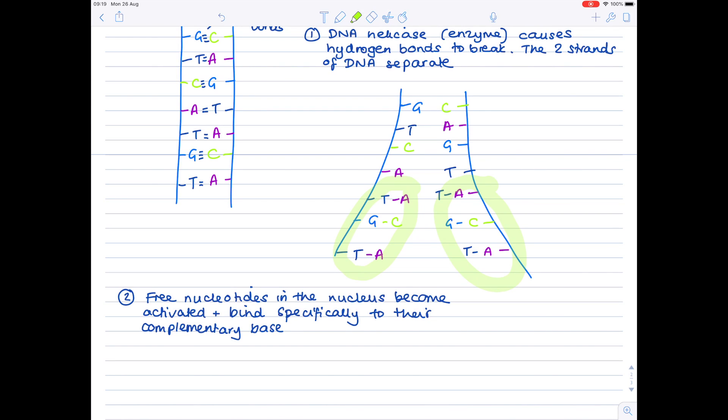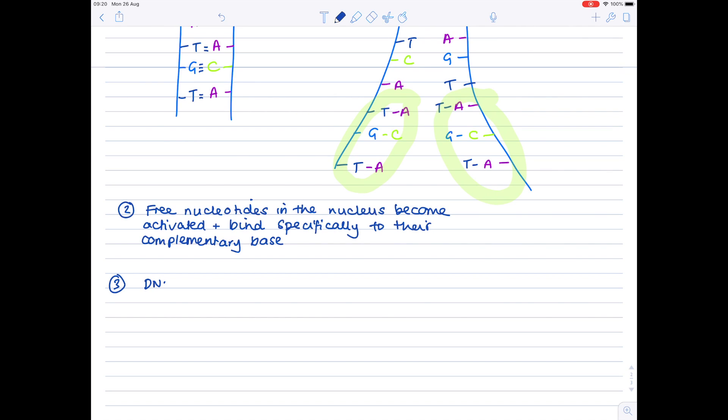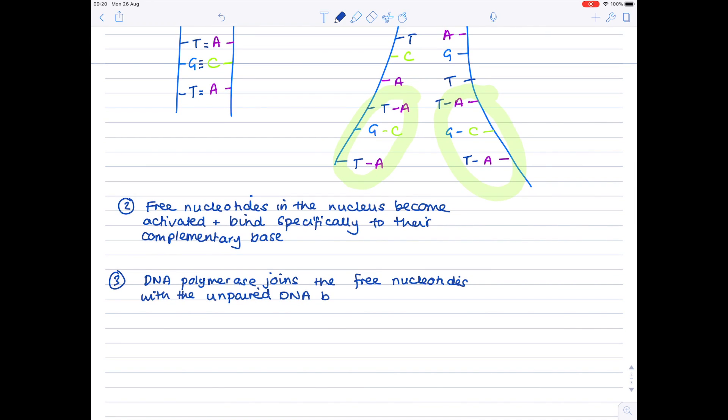Now just to add a further detail. I said that these free nucleotides pair up with the exposed bases. In order to attach properly to form bonds, we need a second enzyme which I've already mentioned, which is DNA polymerase. So DNA polymerase joins the free nucleotides with the unpaired DNA bases, and here a special type of bond is used, which is the phosphodiester bond.